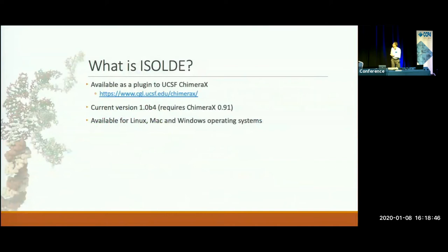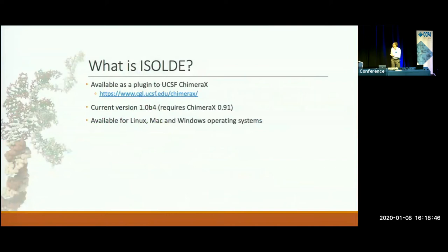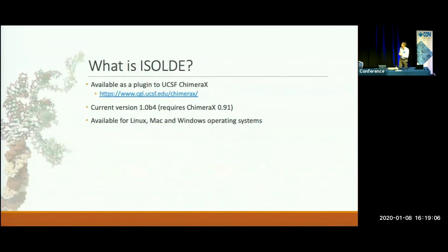The version available now, released last week, is 1.0 beta 4, available for all three major operating systems. It works best on Linux and Windows, simply because Apple is getting less and less good at supporting GPU computing. To install it, go to ChimeraX, go to their tool shed, follow the links, click a few buttons, and you have it on your machine ready to go.